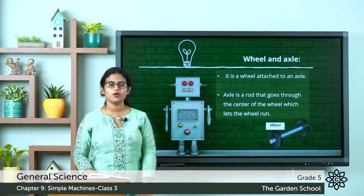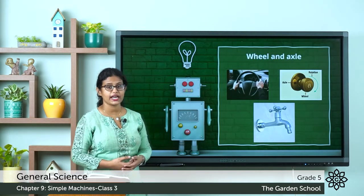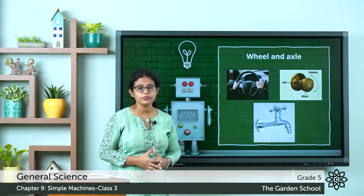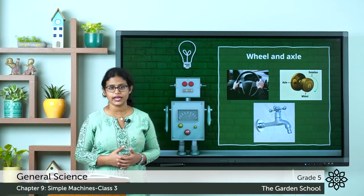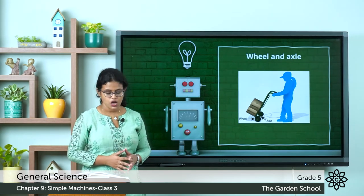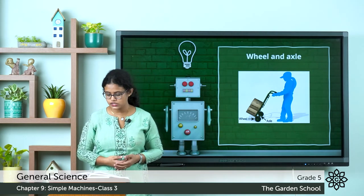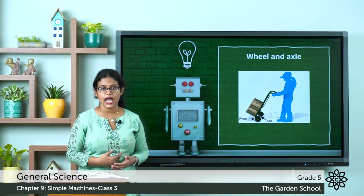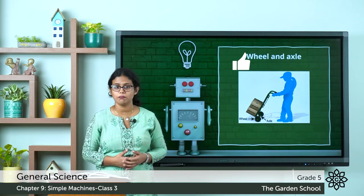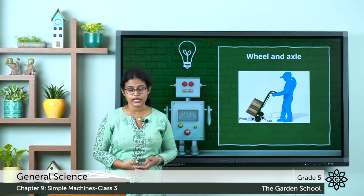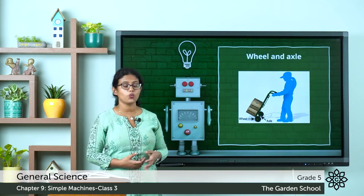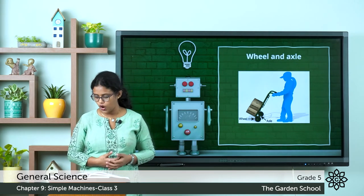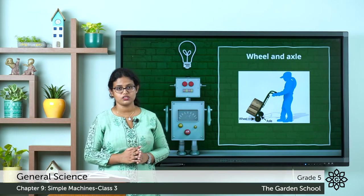Examples of wheel and axle include the steering of a car, the handle of a door, and a tap knob. Wheels attached to an axle move and carry loads with less effort. The wheel and axle can be used for moving heavy objects and to set things in motion.